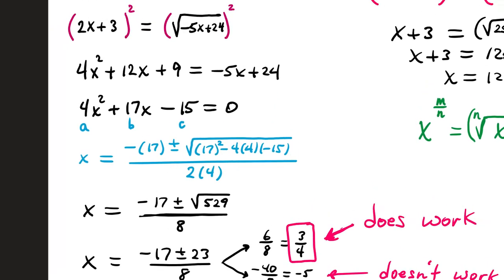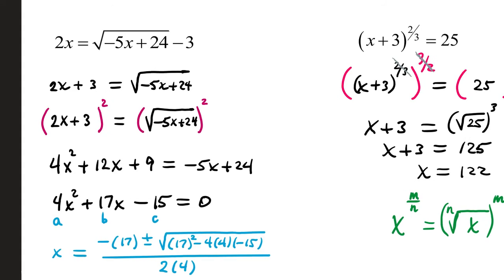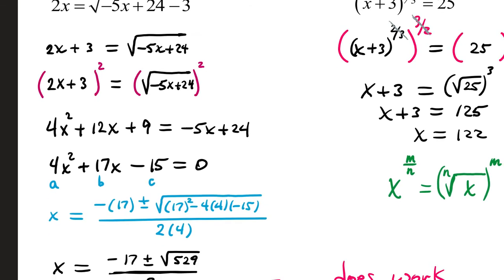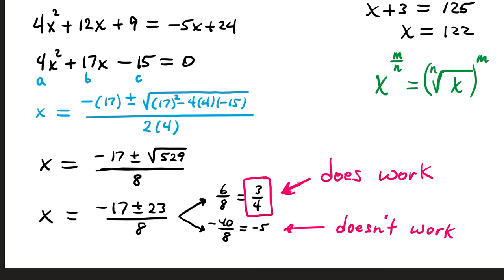When you check this in the original problem, plug in your two answers in for x, one at a time, though. So you would try your negative 5, and you would put it in for both of these x's. Make your calculations. If you get the same answer on both sides, great, you get to keep that answer. It turns out that when you substitute in 3 fourths in the original problem, you do get matching sides. This answer works.